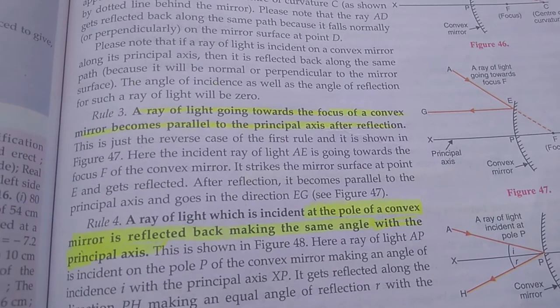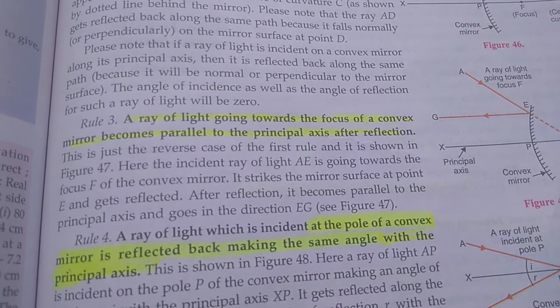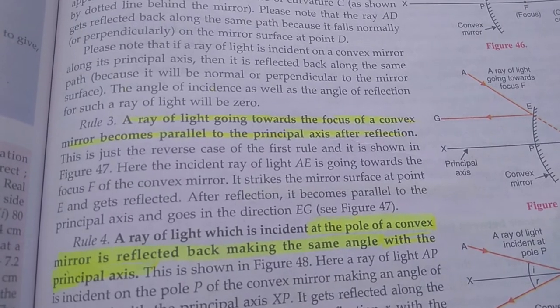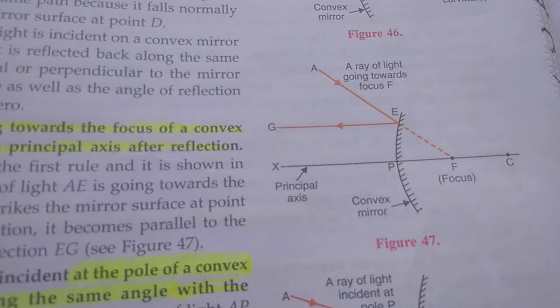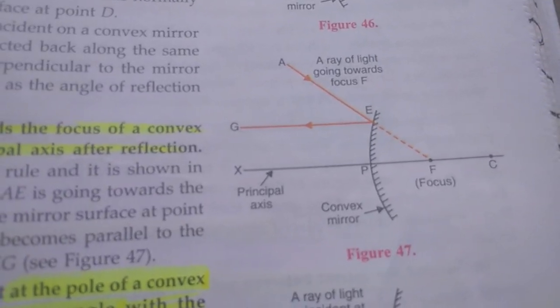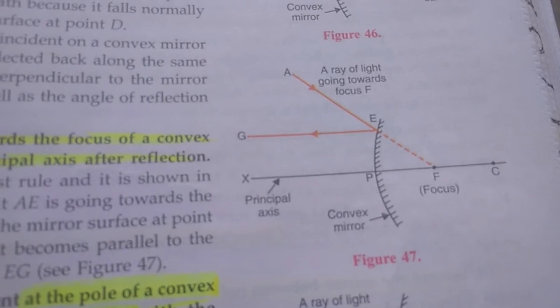Rule number three. A ray of light going towards the focus of a convex mirror becomes parallel to the principal axis after reflection. You can see here, the ray is going parallel after reflection.